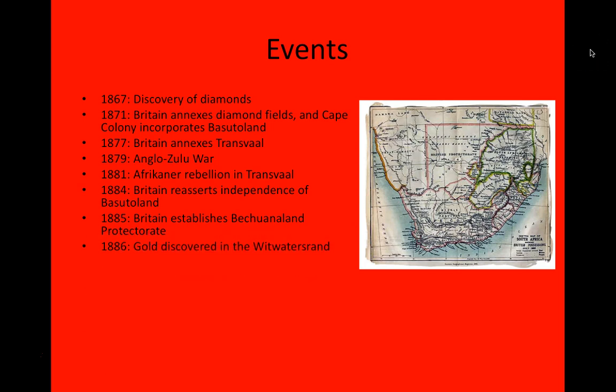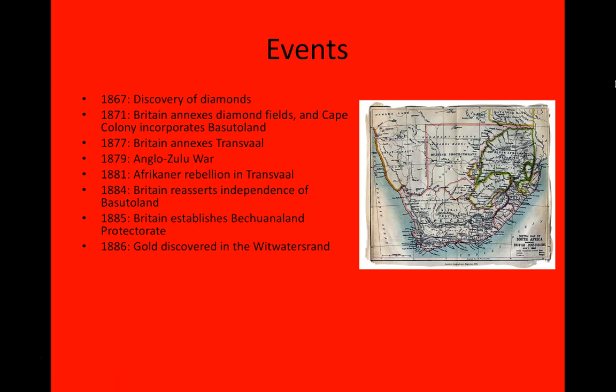In 1886, gold was discovered in the Witwatersrand region — the Whitewater Ridge — up in the Transvaal. The town, later the city, of Johannesburg grew up almost overnight around those gold fields. The gold mining came to dominate much of the economy of Southern Africa.